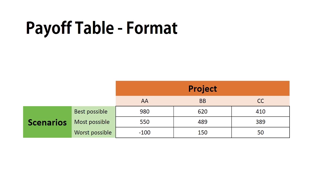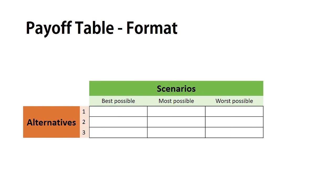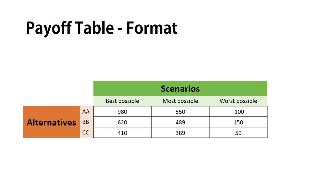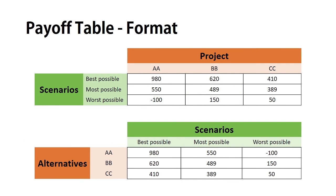Here is one example where projects and their resulting payoffs under each scenario are arranged in a tabular form. However, the arrangement of alternatives and scenarios can interchange, with scenarios taking up the columns and alternatives taking up the rows. Here is the payoff table with the same three projects seen earlier but with a different arrangement. Here are the two possible arrangements together for easily understanding how the values are organized.